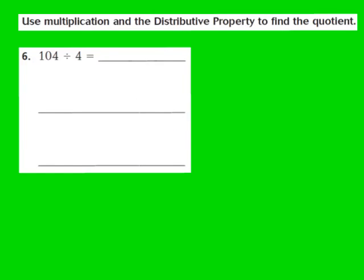Let's take a look at question number 6. Again, we use multiplication and the distributive property to find the quotient. For question 6, they give us 104 divided by 4. My first step is to write a related multiplication sentence: 4 times blank equals 104. Next, I use the distributive property to break apart that larger product. I'll break 104 into 100 plus 4, because 100 plus 4 equals 104, and both 100 and 4 are multiples of 4.